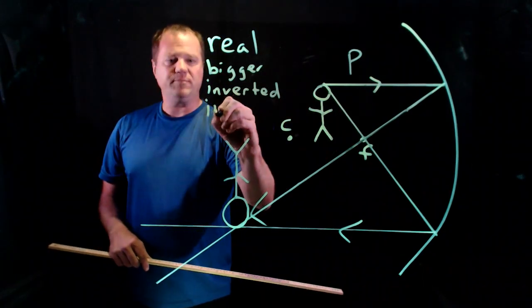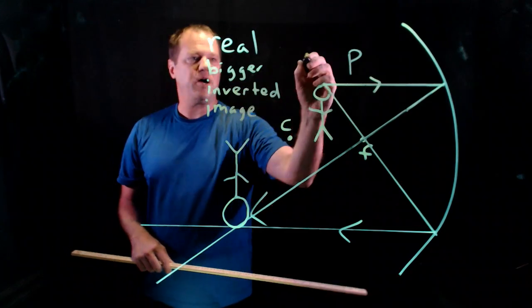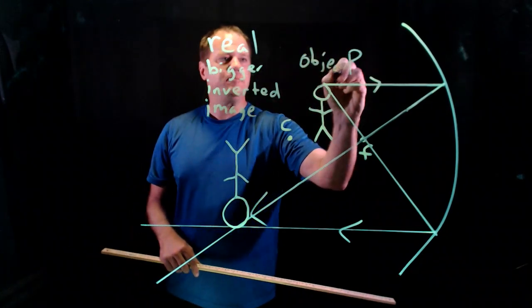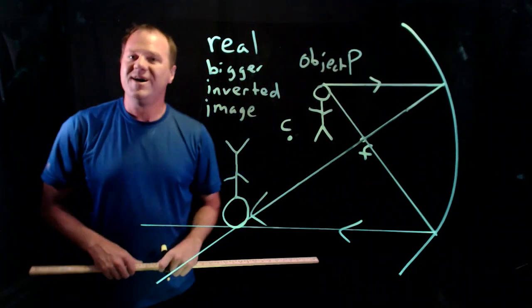And we call that the image. So here's our object over here, our source of light, and here's what our image looks like.